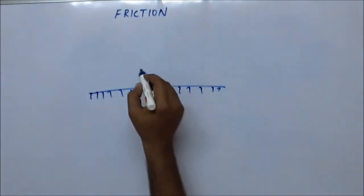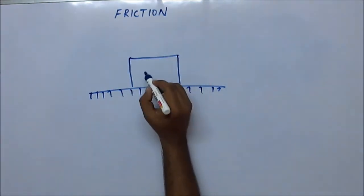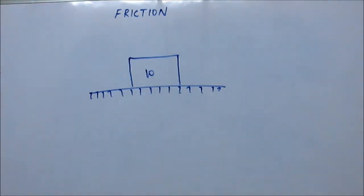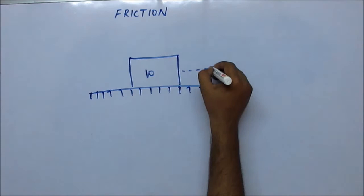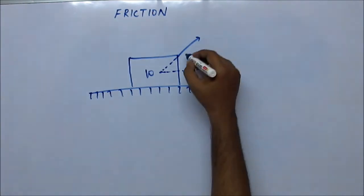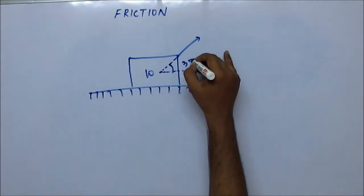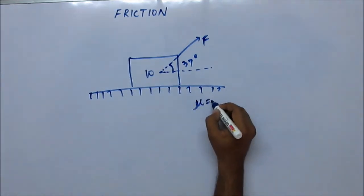Okay, now let's do one interesting problem. This is a block of 10 kg mass and you're applying some force on this block at an angle of 37 degrees with the horizontal, and suppose the mu value is also given. Consider that as 0.5.